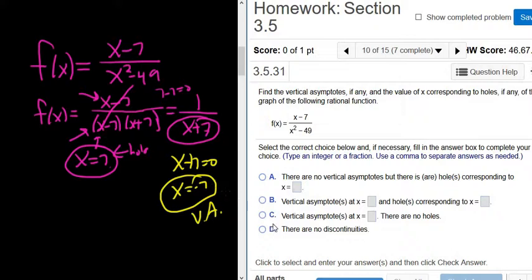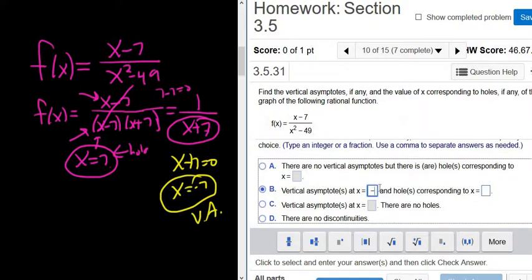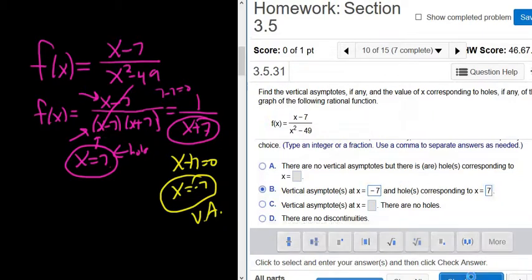So it looks like it's going to be this one here. The vertical asymptote is negative 7, and the hole is at 7. Let's try it. Yep, that's it.